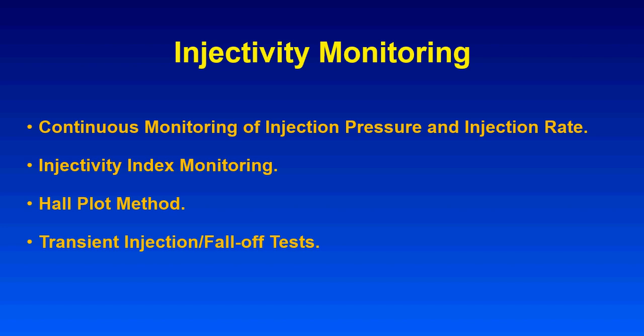An injection test is the reverse of a production test or drawdown test, and it is followed by a falloff test. The falloff test means you shut in the injector — this process is the reverse of a buildup test in a producing well.